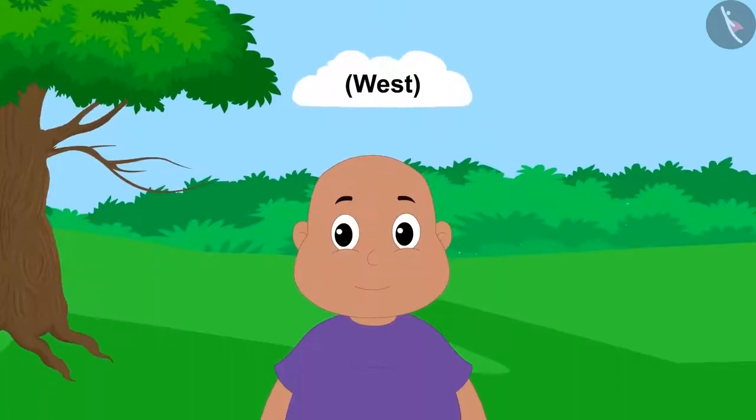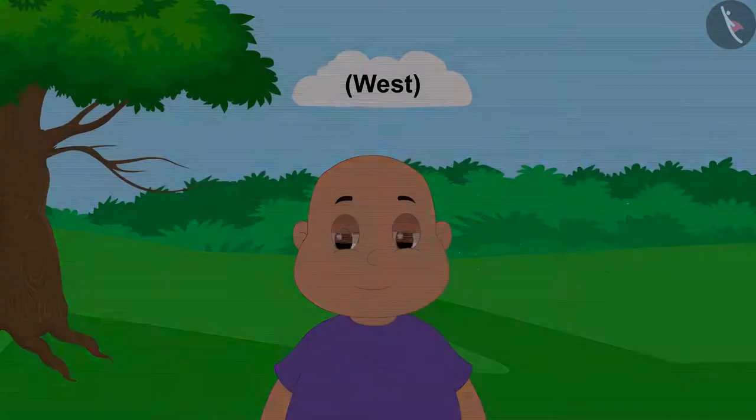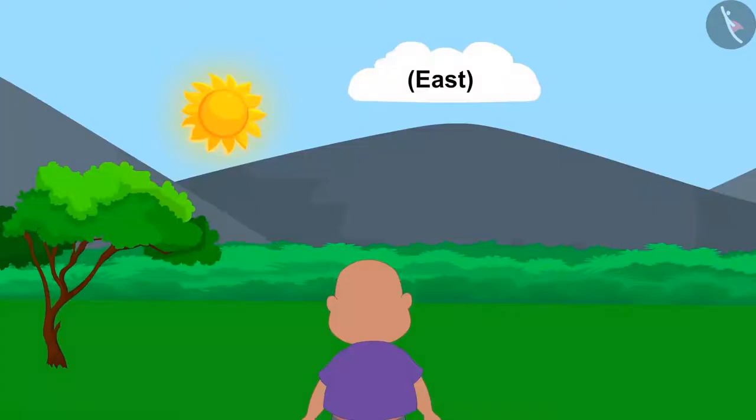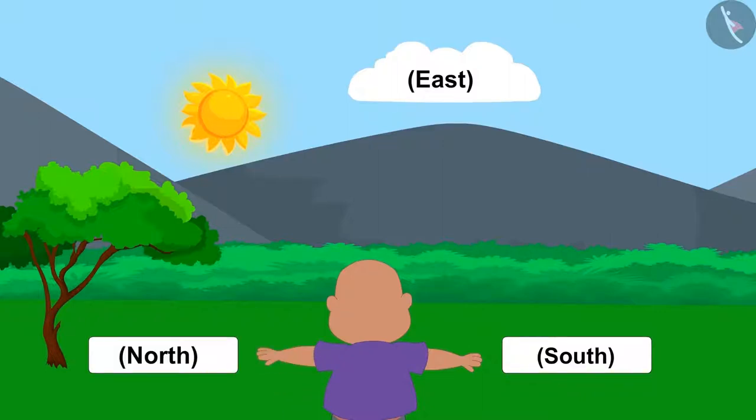West will be towards your back. South would be towards your right hand. And the North would be towards your left hand.